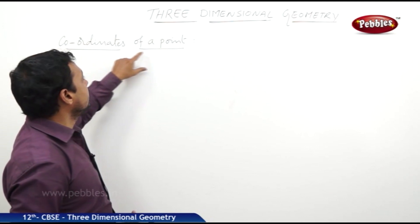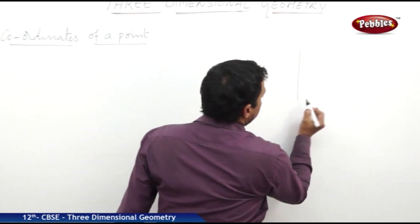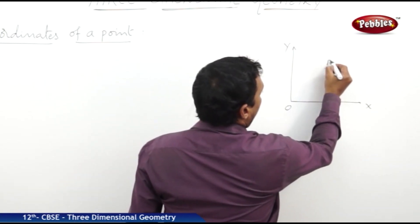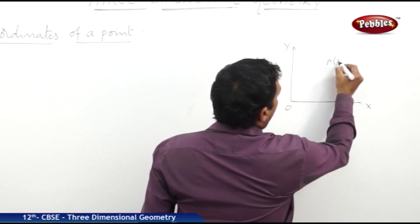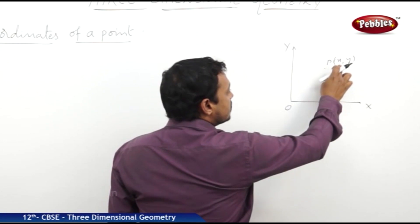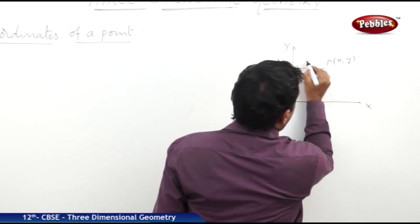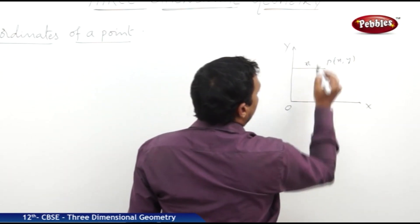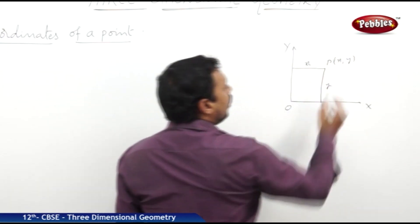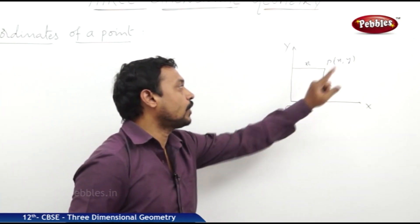Now let us see the coordinates of a point in three dimensions. First, recall coordinates in two-dimensional geometry: there are two coordinate axes, x-axis and y-axis, with an origin. For a point P with coordinates (x, y), x is the distance of P from the y-axis, and y is the distance of P from the x-axis.